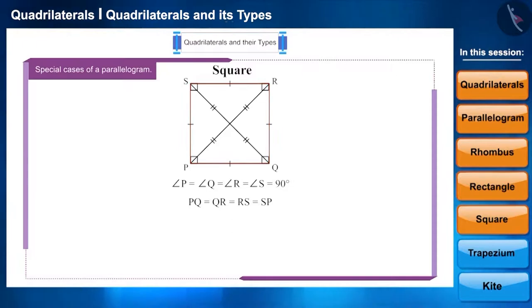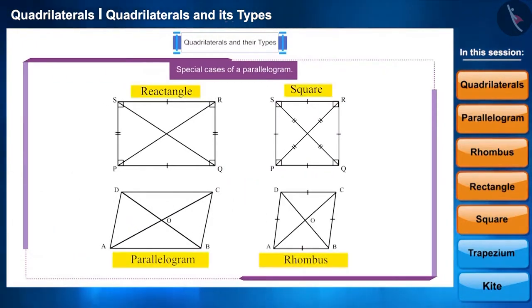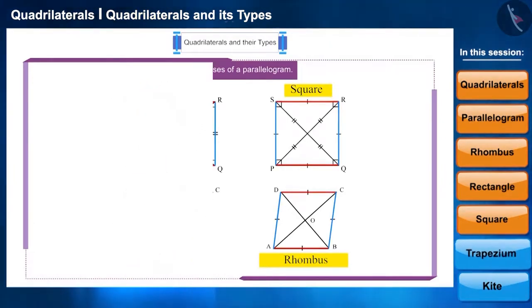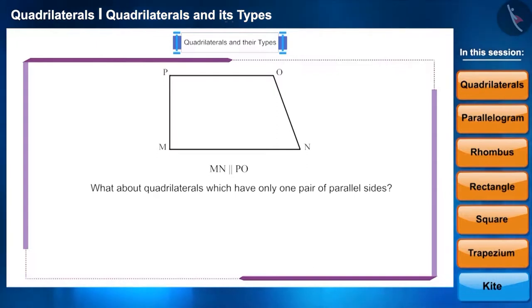All the quadrilaterals we have seen so far have parallel opposite sides, but what about quadrilaterals which have only one pair of parallel sides? What do we call these types of quadrilaterals? You may pause the video to think about an answer. Friends, such quadrilaterals are called trapezium.